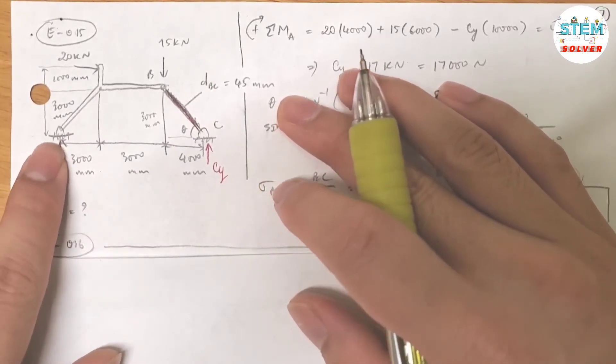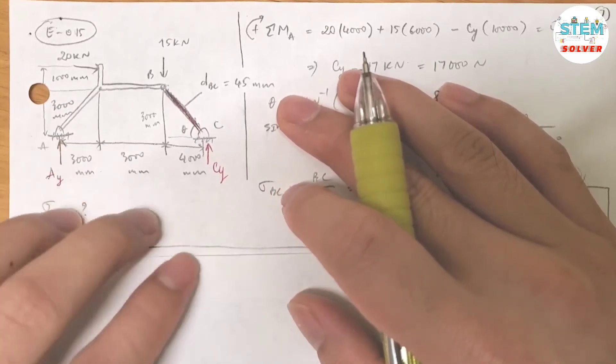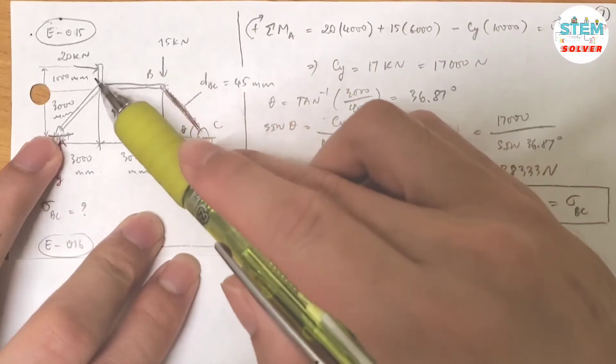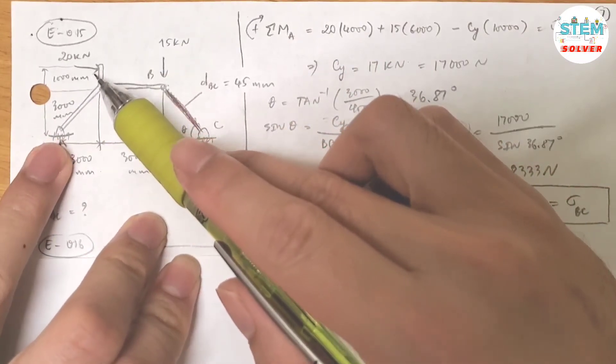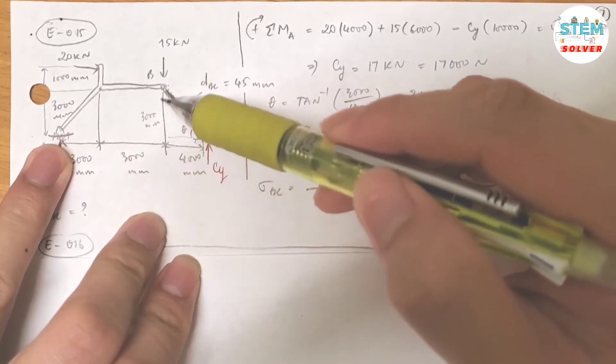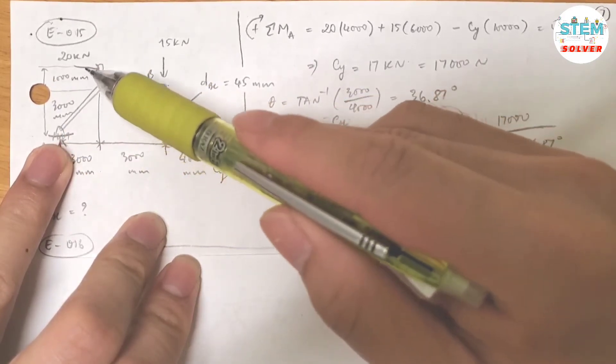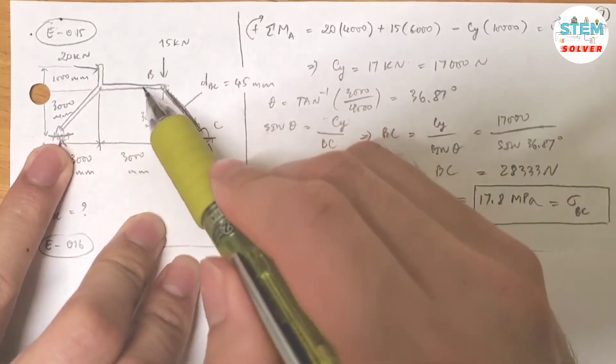So let's take a moment about point A and assume clockwise is positive. So I have this force, let's start with this force first, left to right. So I have 20 times the distance from here to here.